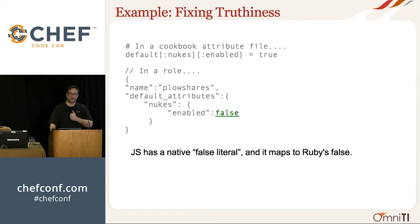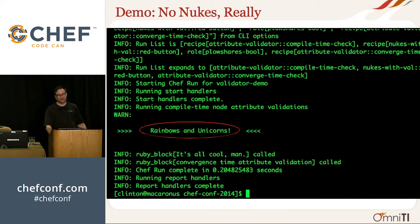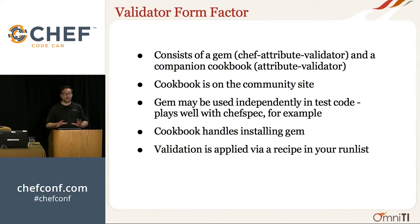Fixing truthiness. It turns out JavaScript does have a literal false and you can just say false — that works. That's kind of lucky though; that's one of the few types you can use in JSON. I do have a demo of it running and not blowing up, but it's not that interesting — it just works.